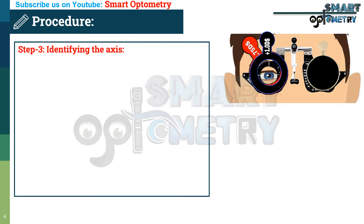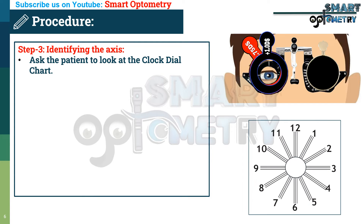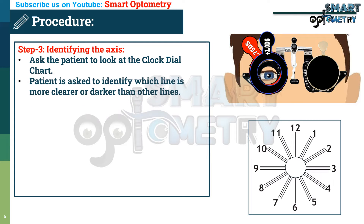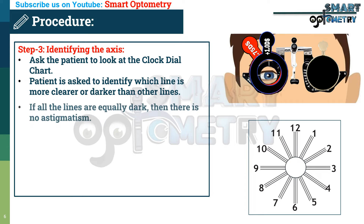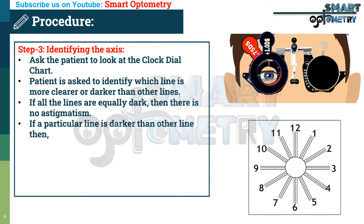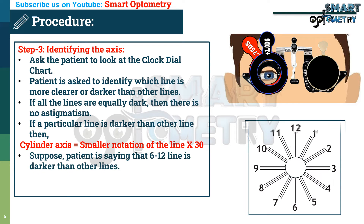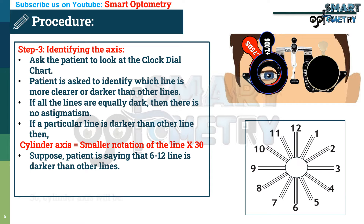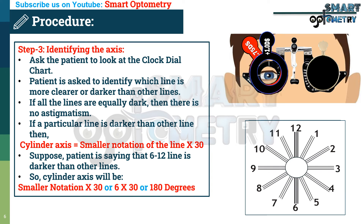Step 3: Identifying the cylinder axis. Ask the patient to look at the clock dial chart and identify which line appears clearer or darker than the others. If all lines are equally dark, there is no astigmatism. If a particular line is darker, the cylinder axis equals the smaller notation of that line multiplied by 30. For example, if the 6–12 line is darker, the cylinder axis is 6 × 30 = 180 degrees.